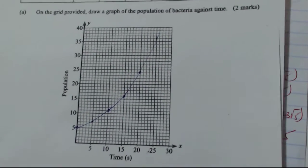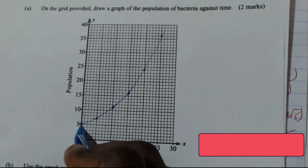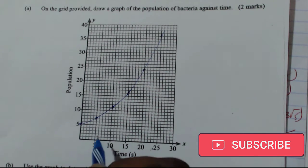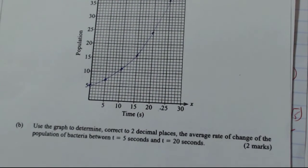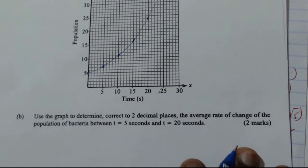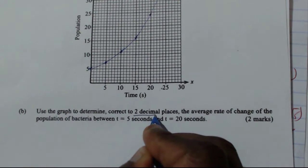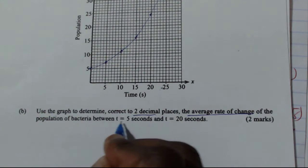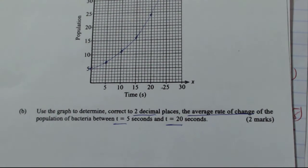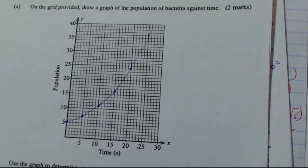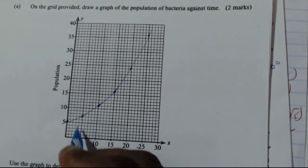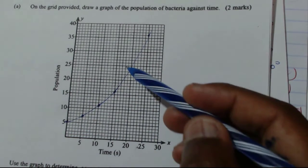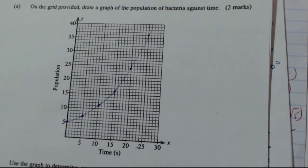So you plotted it. So that is just what was required there. Ensure that the graph is passing through all these points that you have plotted here. Now after plotting, you should go to the next question. Use the graph to determine correctly to two decimal places, the average rate of change of the population of bacteria between T equals 5 and T equals 20.